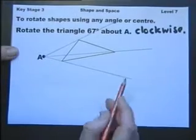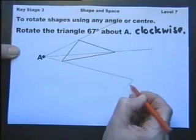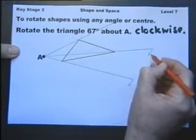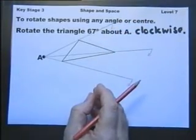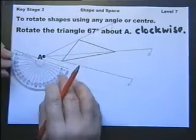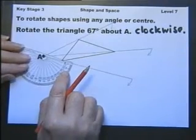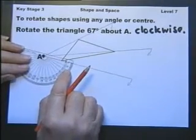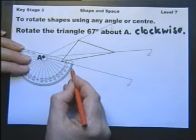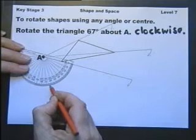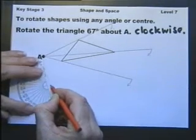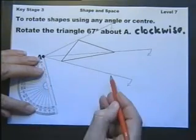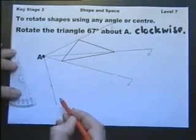We're then going to rotate each of these lines clockwise the angle of 67 degrees. So with a protractor on the centre of rotation and along the line that we're going to rotate, let's go round 67 degrees. That means to say that line rotates round to become here. Now let's take the next line.